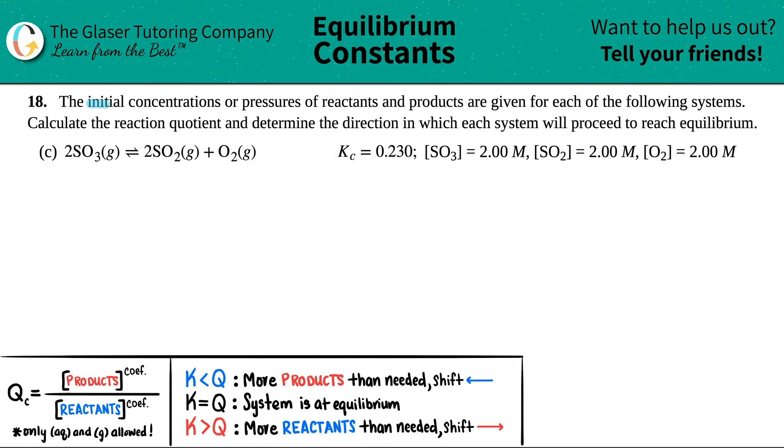Number 18. The initial concentrations or pressures of reactants and products are given for each of the following systems. We have to calculate the reaction quotient and determine the direction in which each system will proceed to reach equilibrium.